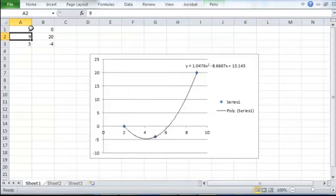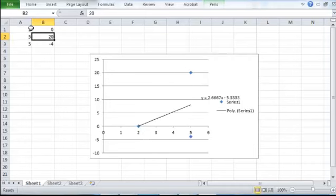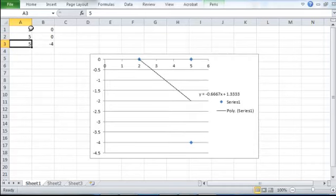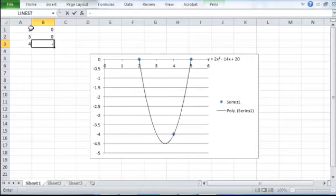And the y is 0. So 2, 0 is one set of points, 5, 0 the other set of points, those both are the points that correspond to the intercepts, and then the last given point was 4, negative 2.